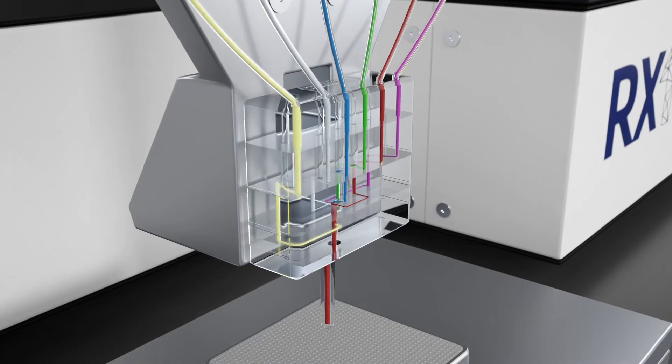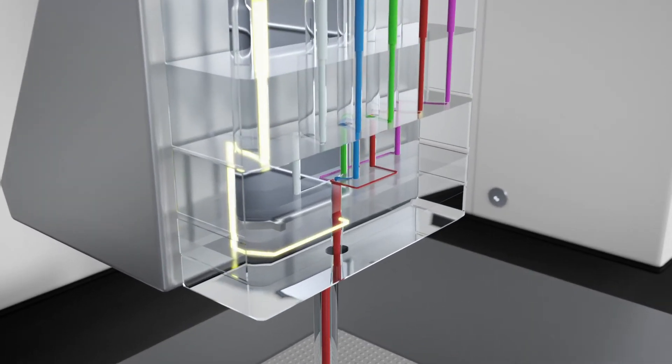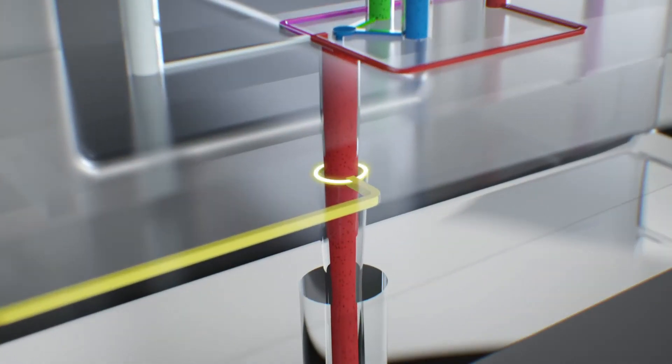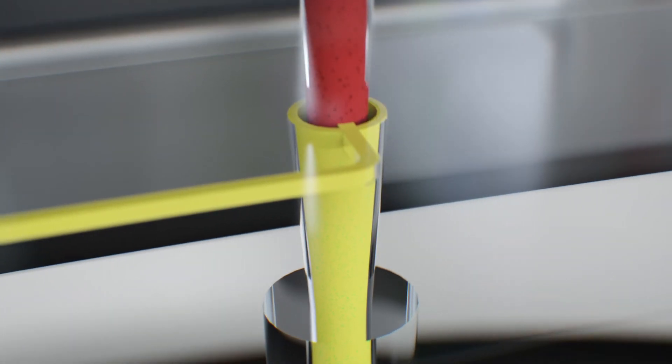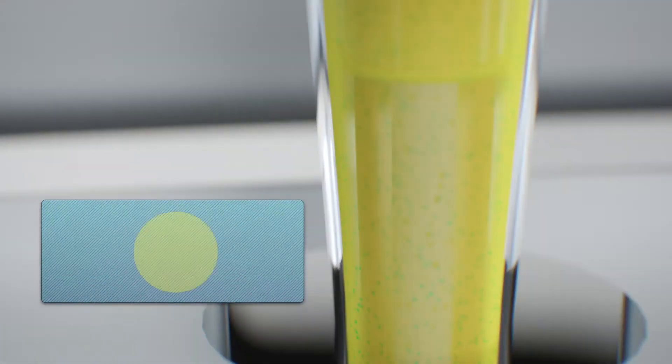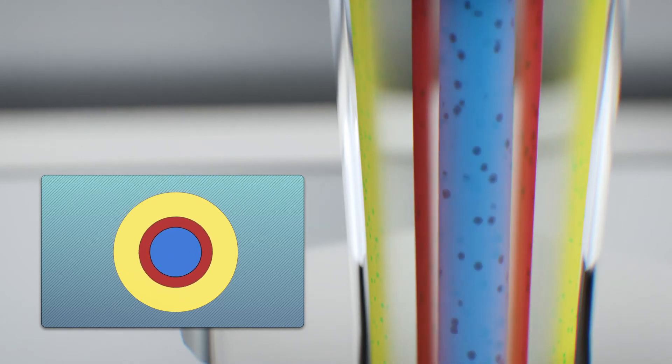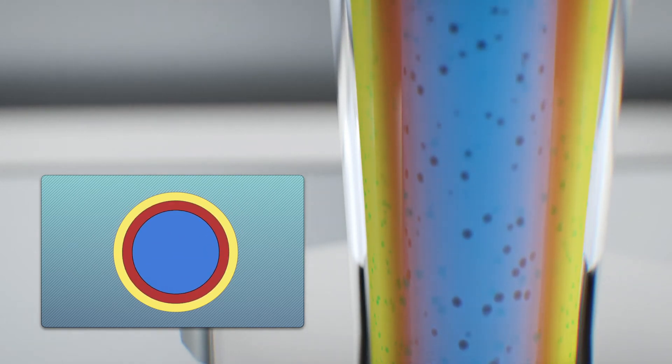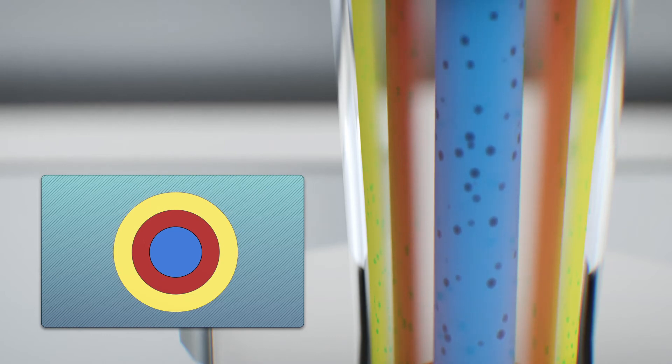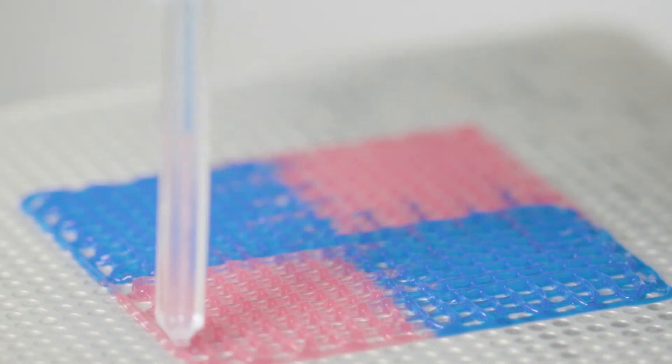A sheath fluid is flowed into the printhead to surround and coaxially flow-focus the bio-ink. A wide range of fiber diameters can be printed with a single printhead by varying the flow rates of the bio-ink and sheath fluid. The sheath fluid also protects cells from shear stresses encountered in other nozzle-based dispensing technologies.